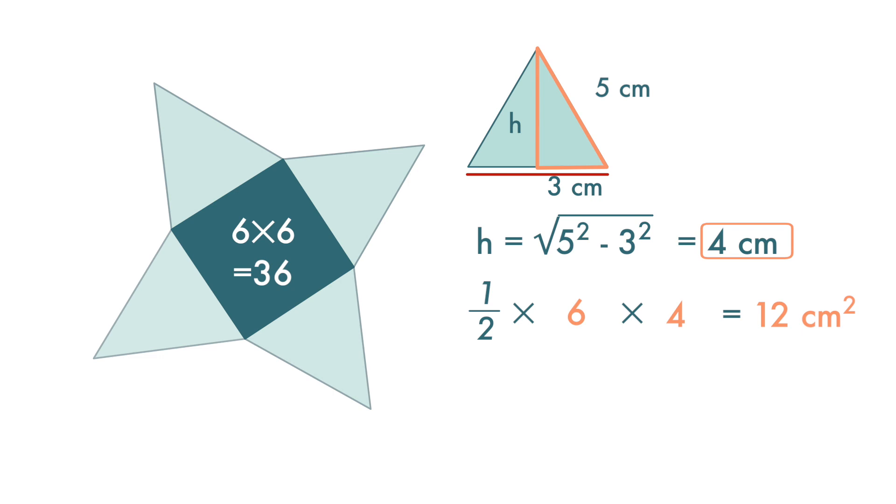To get the surface area of this pyramid, we add up all the faces. First, the square base is 36, and there are four triangles, so we add 4 times 12, and the surface area is 84 centimeter square.